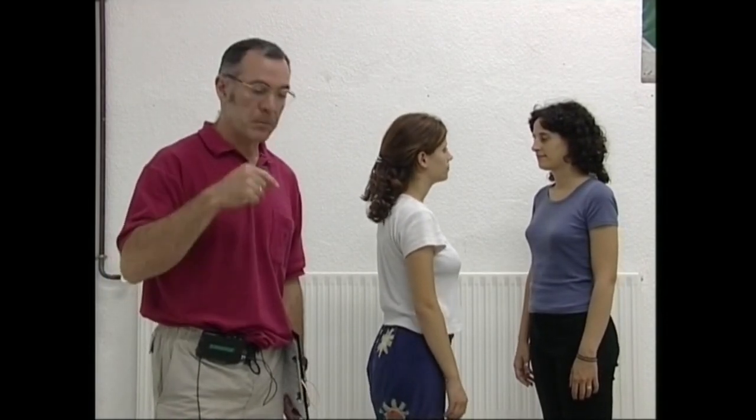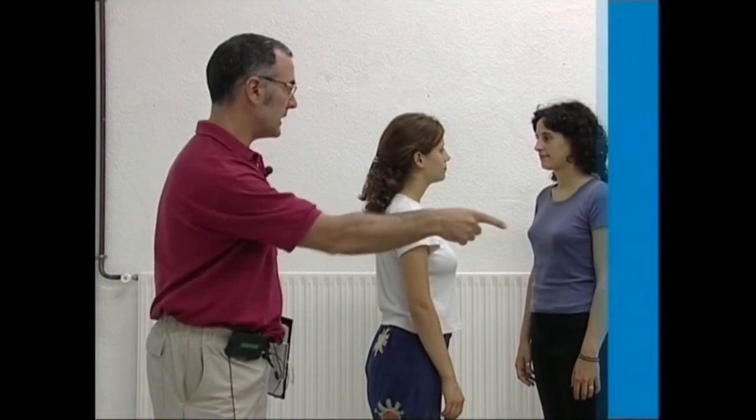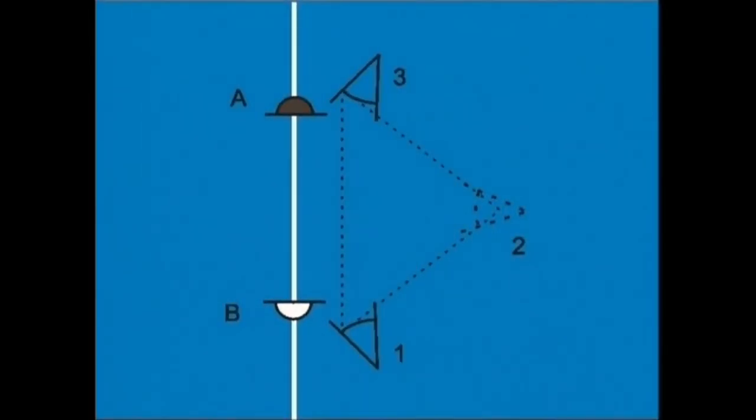Bi aktorek itxi egiten dutenean, euren antzezpena hartzeko kameraren kokagunerik interesgarrienak bat eta hiru dira. Kokagune horiek triangeluaren oinarrian daudenak dira. Kokagune hauek komposizio sakona eskaintzen dute eta bata bestetik ezberdina aktoren posizioaren arabera. Plano batean A aktorea kameratik urbilago eta bestea urrun. Beste kokagunetik hartutako planoan kontrakoa gertatzen da.